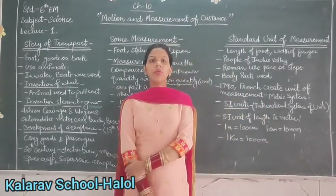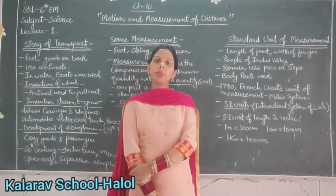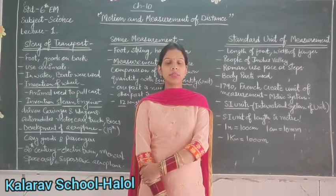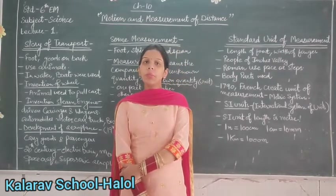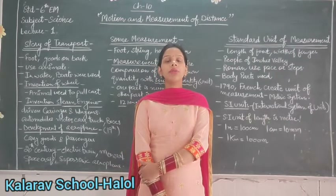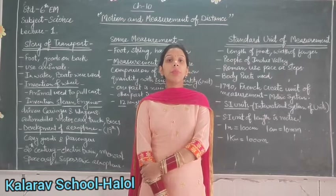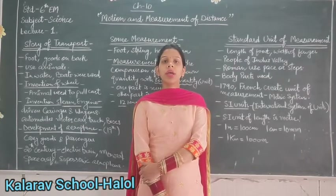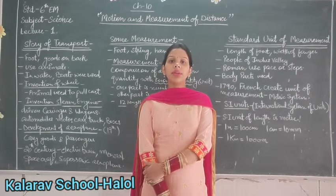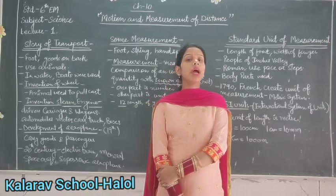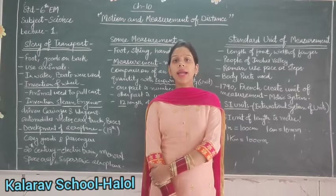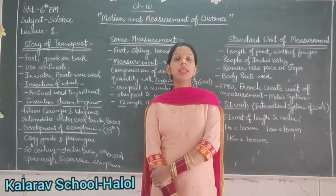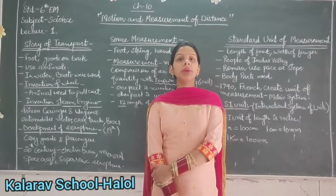We use different modes of transport or different vehicles to travel from one place to another. These vehicles are used for different distances. For example, if you go to a nearby market for shopping, you prefer to go by foot. Your classmates may come to school by school bus, some use cycles, or some come by walking. Different modes are used for travelling, but we are often unable to know how far that place is. To answer that question, we will study the story of transport and the measurement of distances.